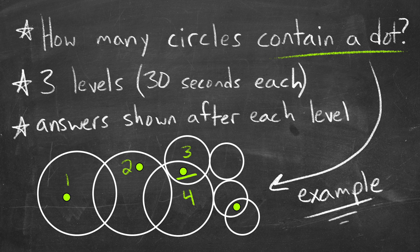You'll notice this dot is in two circles, so keep that in mind. A dot can be in more than one circle. So in this video, some dots will be in one circle, two circles, or even three circles. And then we have five and six circles. This dot is in two circles as well, so we have six circles that contain a dot. Again, keep in mind, a dot can be in more than one circle.